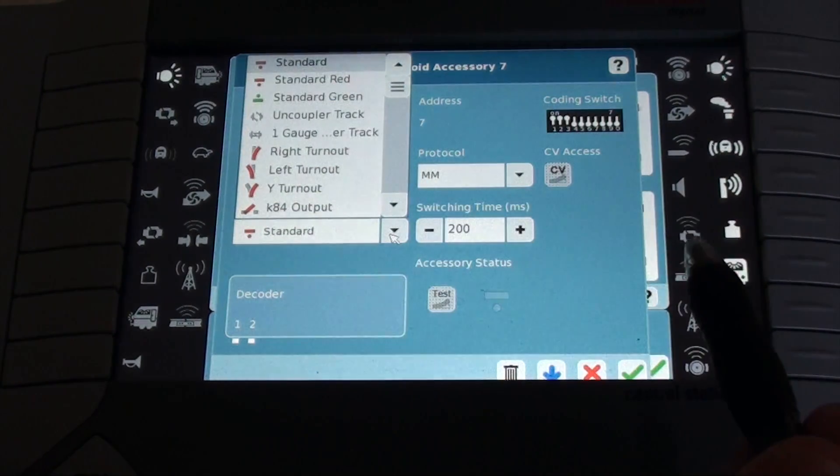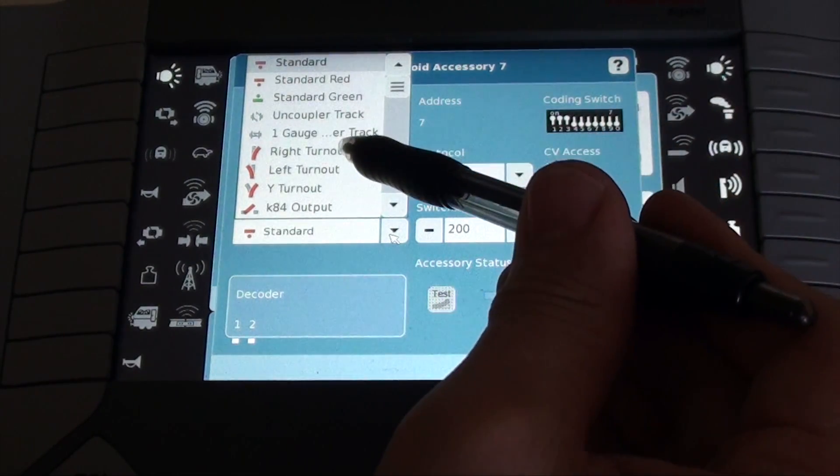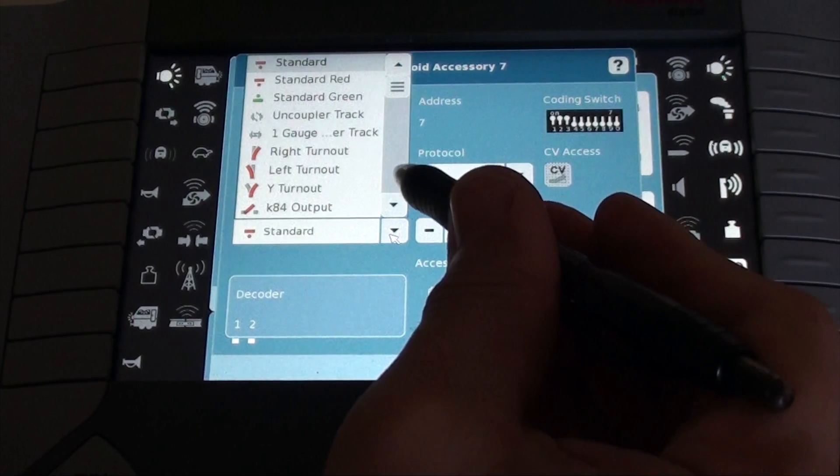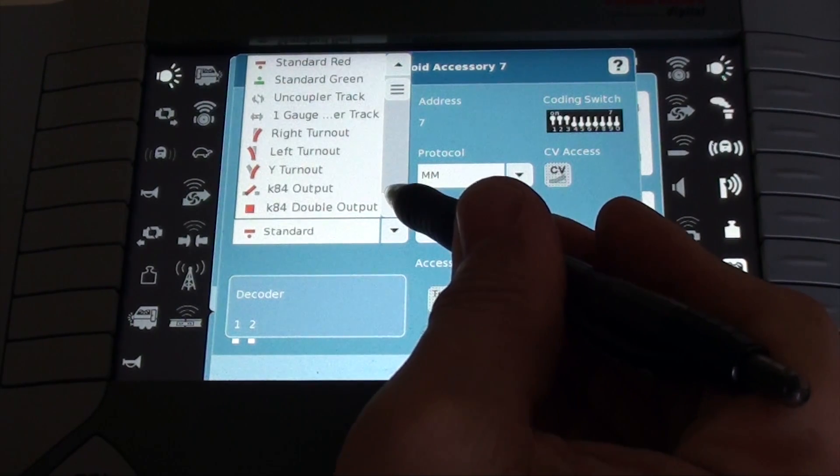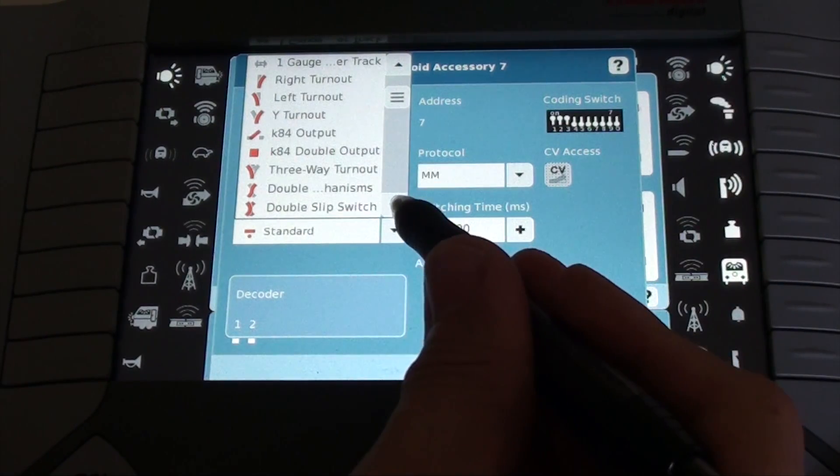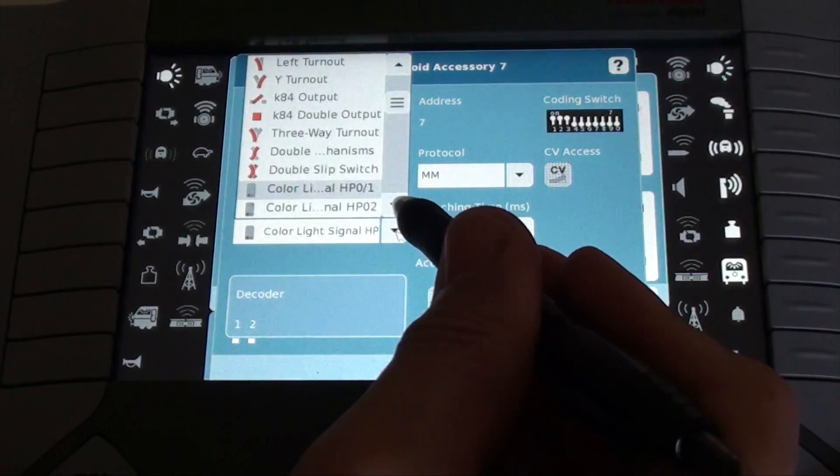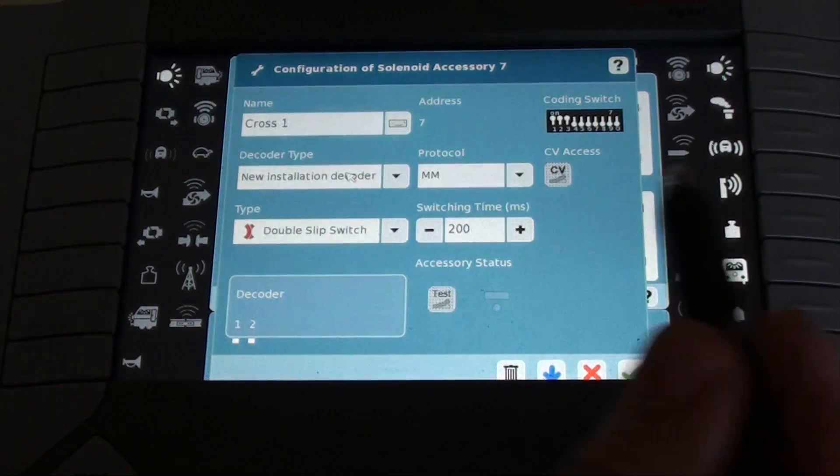In the type, it's not standard. Let's see. Standard red, standard green, uncoupler, right turn out, left turn out, white turn out, nope. Scroll down. Three way turn out, double slip switch. That's the one. Selected. Oops, I selected the one below. So let's go back. Double slip switch. There we go.